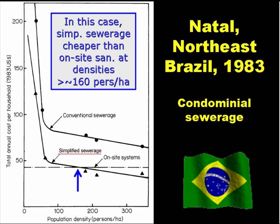Condominial or simplified sewerage was developed in the city of Natal in northeast Brazil in the early 1980s. This chart shows how the costs per household vary with population density. At population densities below about 100 people per hectare, both conventional and simplified sewerage are very expensive.